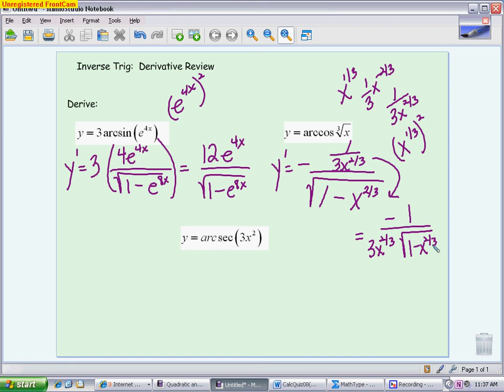The last one is an arcsecant. It is positive because it's not one of the co-functions. In your numerator, you will have the derivative of 3x squared, which is 6x.